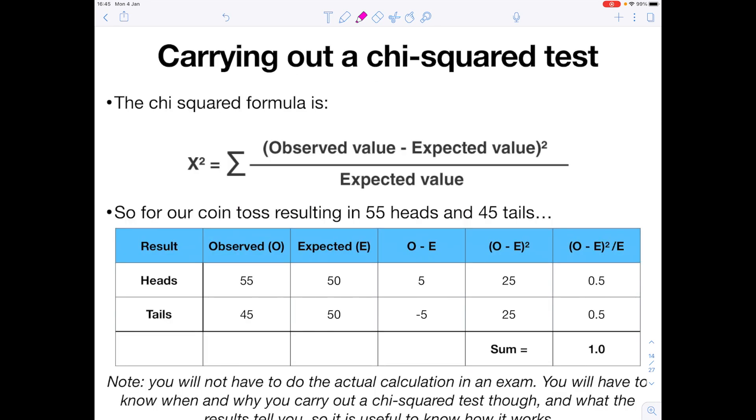So carrying out a chi-squared test, the chi-squared formula looks like this. We have chi-squared is the sum, which is this symbol here, of the observed value minus the expected value squared divided by the expected value. And if we use the table like this we can see how we're going to use that formula.